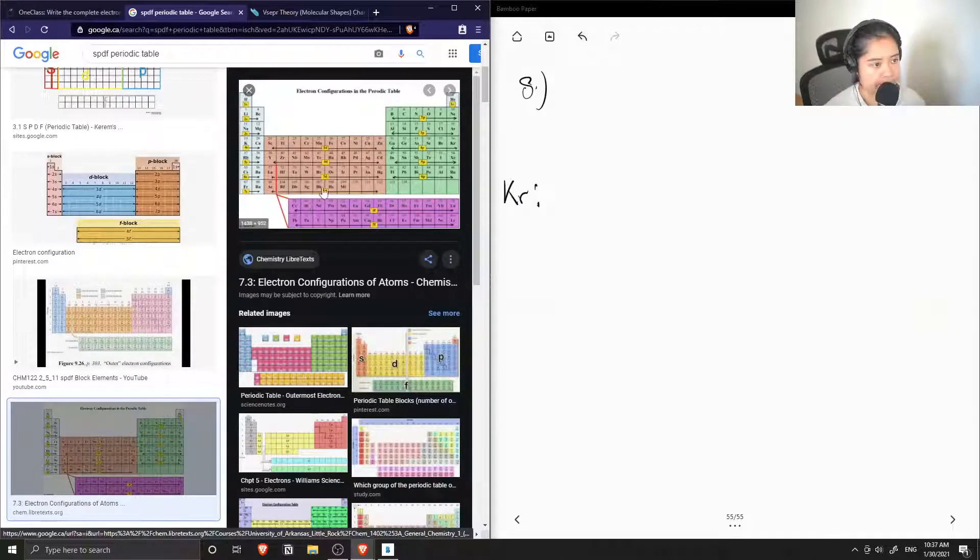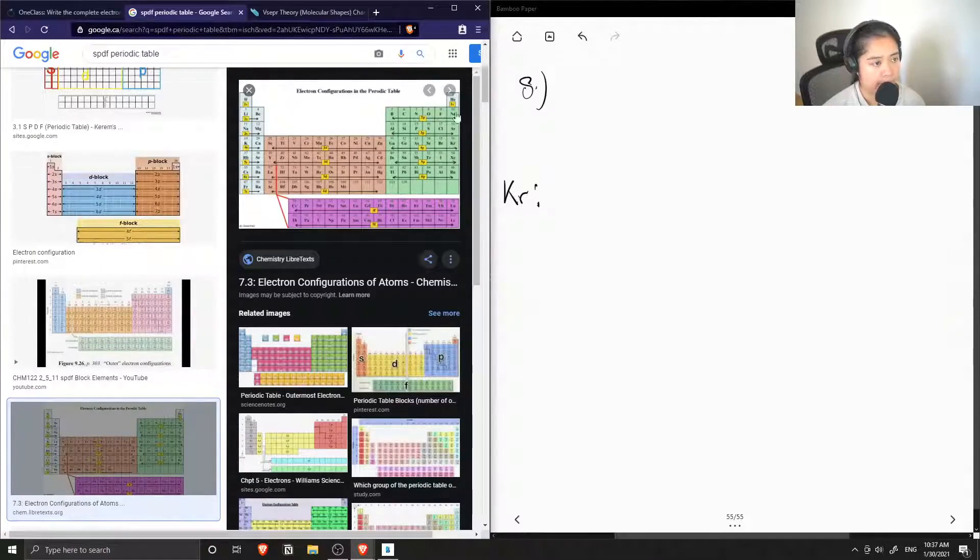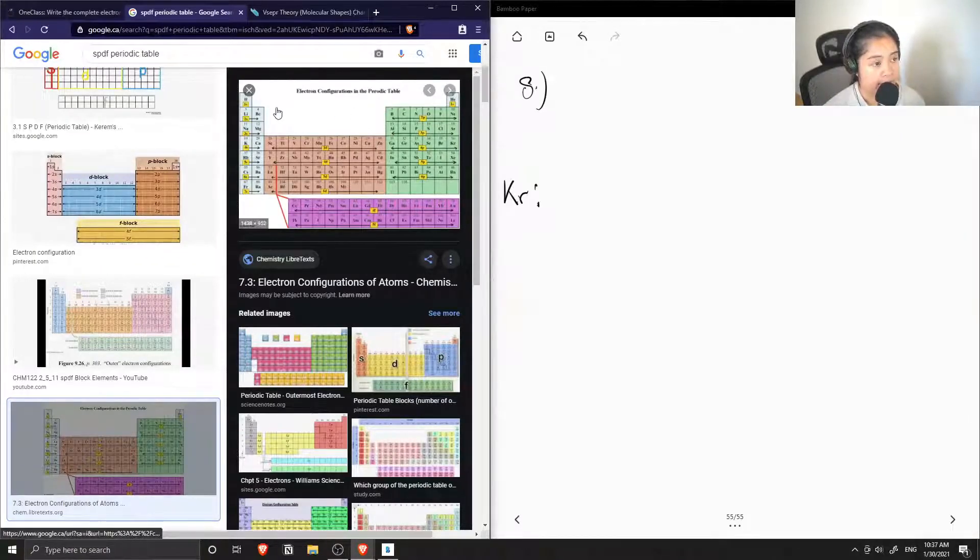So let's find krypton on the periodic table. You can see that it is one of the noble gases and starting from hydrogen we move left to right across the periodic table writing the row number followed by the block letter.